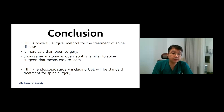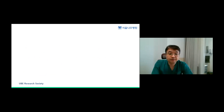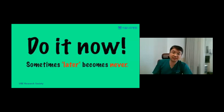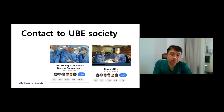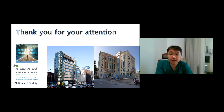Conclusion: UBE is a powerful surgical method for the treatment of spine disease. It is more safe than open surgery and shows the same anatomy as open surgery, so it is familiar to spine surgeons — meaning it is easy to learn. I think endoscopic surgery, including UBE, will be the standard treatment of spine surgery. Do it now — sometimes 'later' becomes 'never.' We have two UBE societies. If you want to join, you can find them on the Facebook website. Thank you for your attention.